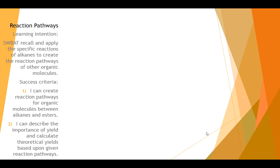So the learning intentions today, and make sure you copy these down, is that you should be able to recall and apply the specific reactions of alkanes to create the reaction pathways of all the other organic molecules. In particular, you should be able to create reaction pathways for organic molecules between alkanes and esters. And the second thing we're going to be looking at is looking at yield, and how do we account yield into our reaction pathways. You should be able to describe the importance of yield and calculate yields based upon the given reaction pathways.